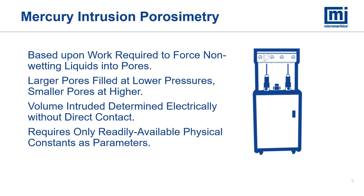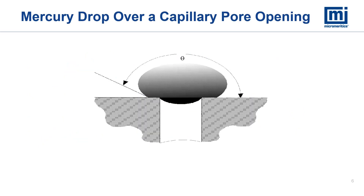Mercury intrusion porosimetry is based upon the work required to force a non-wetting liquid into open pores. Both dead-end pores and through pores are characterized, with the volume of pore filling through the opening to the pore recorded along with the pressure at which the pore fills. The work is necessary to extend the surface area of the mercury down into the pore against the surface tension of the liquid mercury. Since larger pores have less surface area as a function of their volume, it is easier to force mercury into larger pores at lower pressures than into smaller pores, which require higher pressures. The intrusion volume is determined electrically using capacitance, and only a few physical constants are needed.